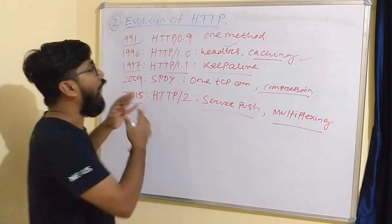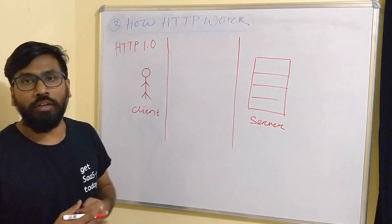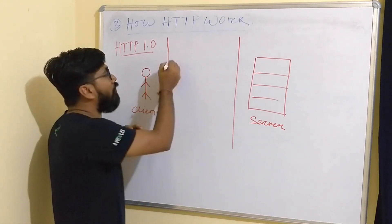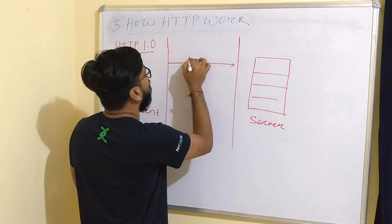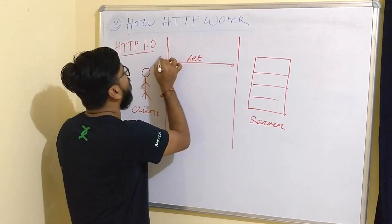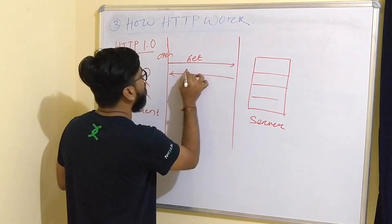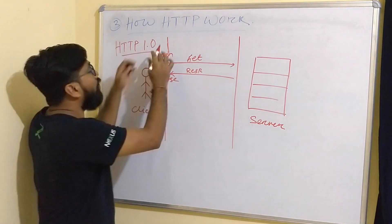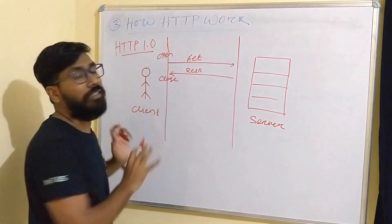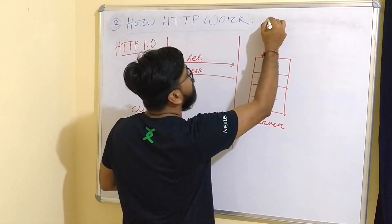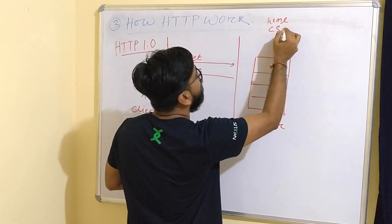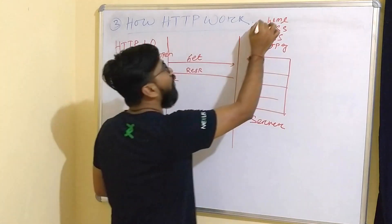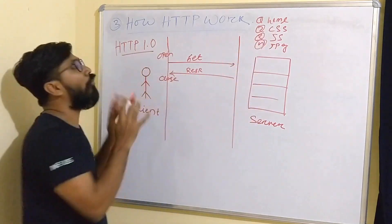Let's start with how HTTP 1.0 works. An HTTP request opens a TCP connection, makes a GET request, gets the response, then closes the connection. So each TCP connection makes one request, gets the response, and the connection is closed. Suppose you have four files to load for a website: an HTML file, a CSS file, a JS file, and an image JPG file.